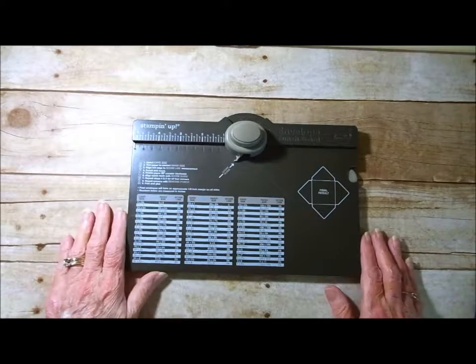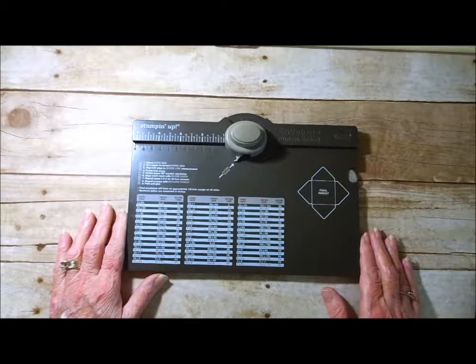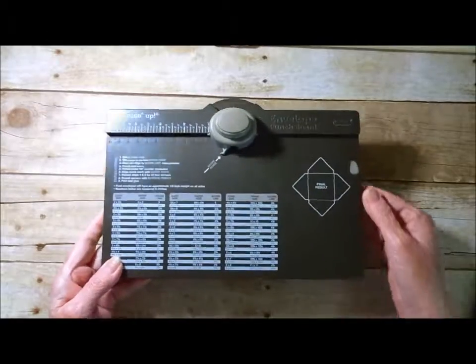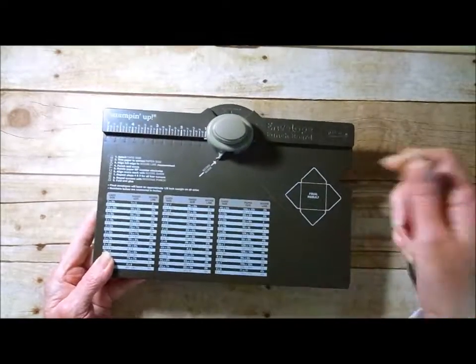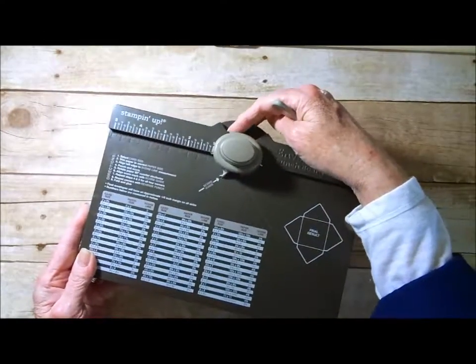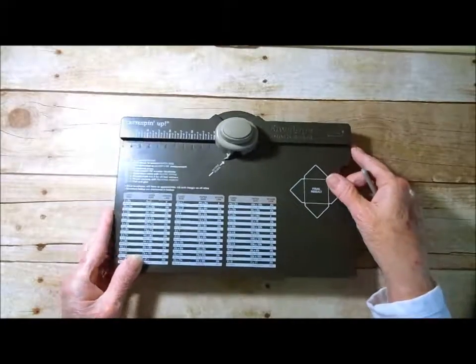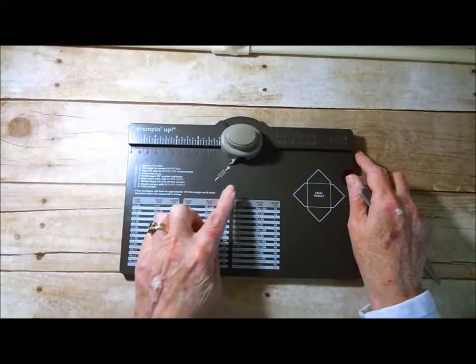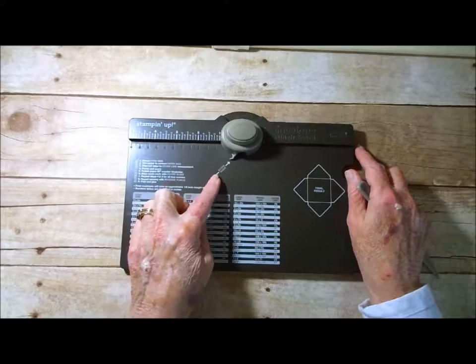Today I have the Stampin' Up! envelope punch board. It comes with the bone folder and on this side is your corner rounder and this tip right here will be your score guide.